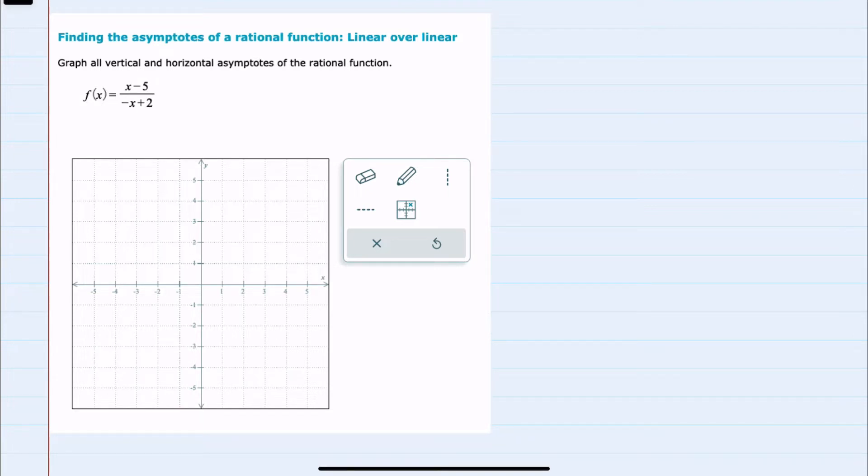We have the function here f of x, and we're asked to find both the vertical and horizontal asymptotes.